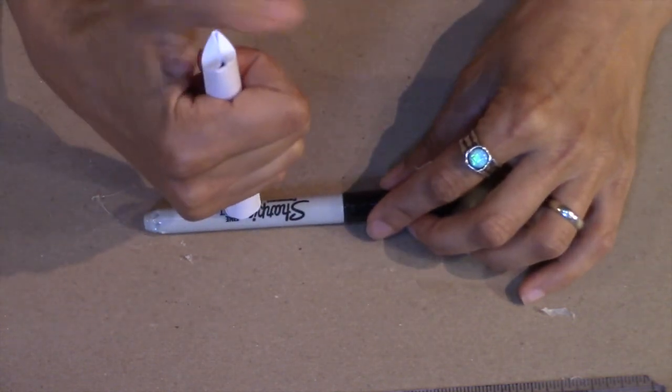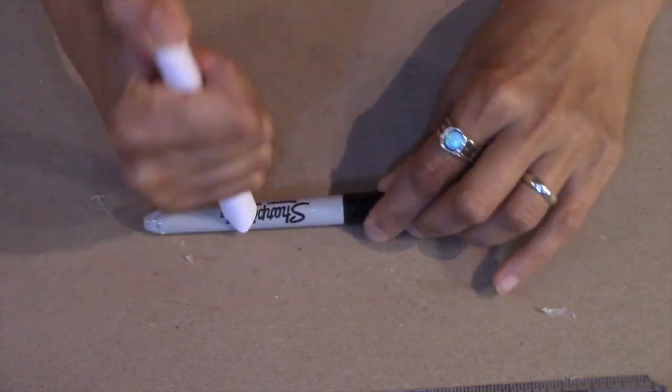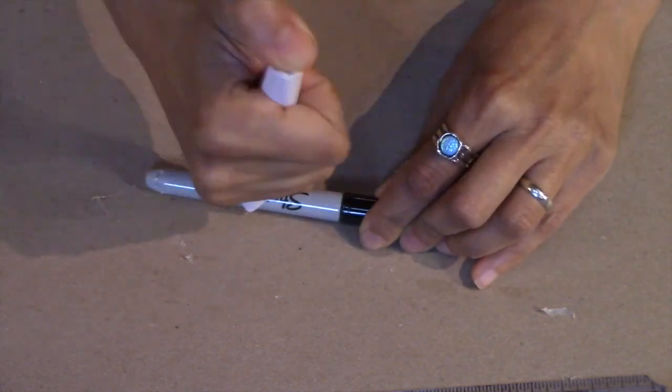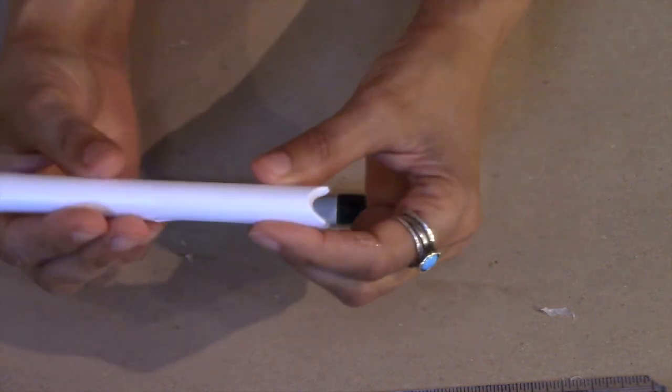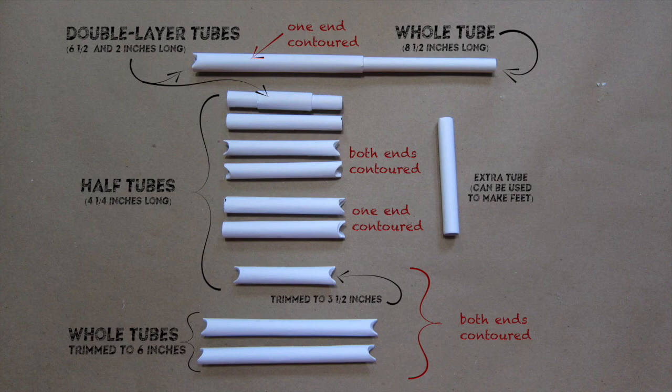The reason I'm contouring the ends of these tubes is to make them fit a little bit better. This will give you a stronger bond, and all the dimensions in this video are assuming that you contour the ends. If you're using hot glue like I do in the video, it's not absolutely necessary because hot glue can fill some pretty big gaps.